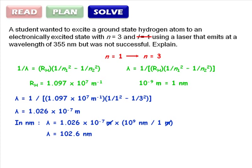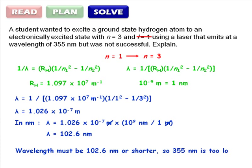Finally, we need to explain the observation in the question. The wavelength must be 102.6 nanometers or shorter, so 355 nanometers is too long to induce the transition.